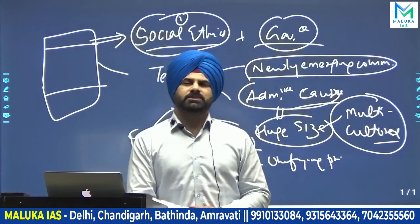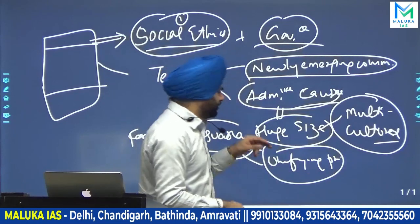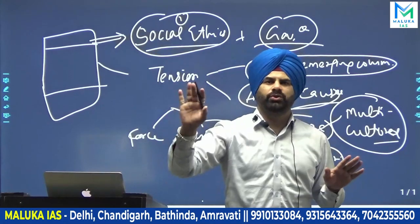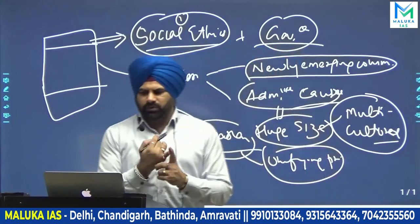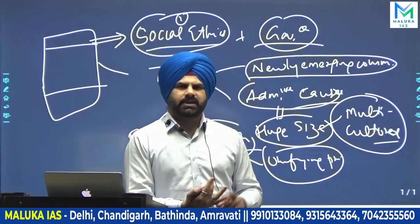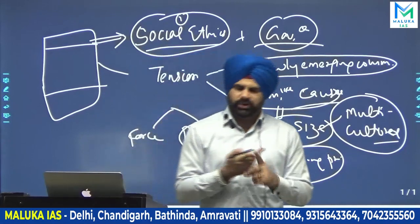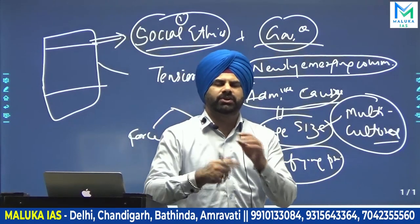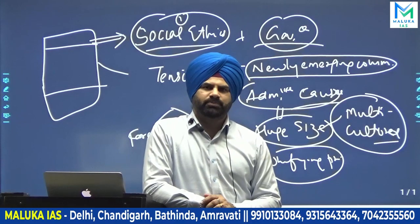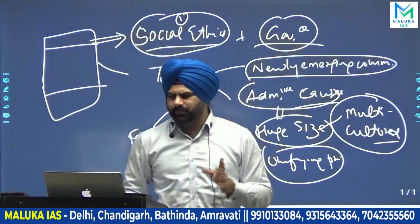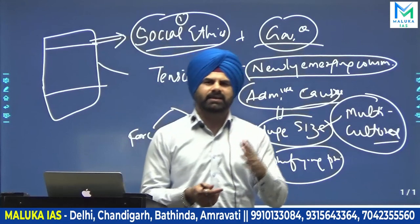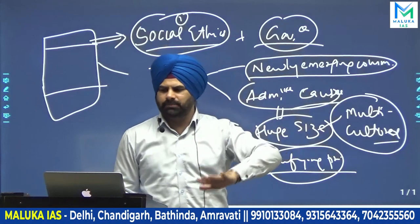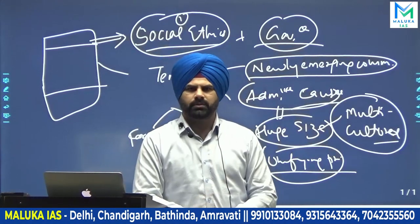These unifying principles defined what a person should do and what a person should not do. For example, non-violence should be there. Kindness should be promoted. Integrity should be promoted. Respect should be given to Brahmanas, Shramanas, elders, parents, and children. And things like pride, anger, and jealousy should be avoided. So you have a unifying principle covering what you should and should not do.